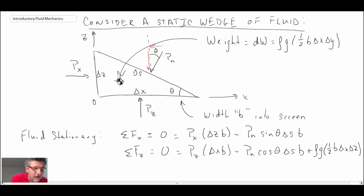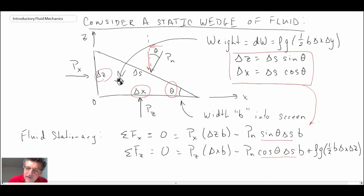Now, what we're going to do, we're going to replace sine theta delta S and cos theta delta S using trigonometry. And so what we can write is that delta Z is equal to delta S sine theta, and delta X is equal to delta S cosine theta. And that's just using the angle that we have within the fluid wedge here. Now, with that, we can take this and plug it into our equations down here and remove the delta S sine theta and the delta S cos theta. So let's do that in the next slide and see what we get.